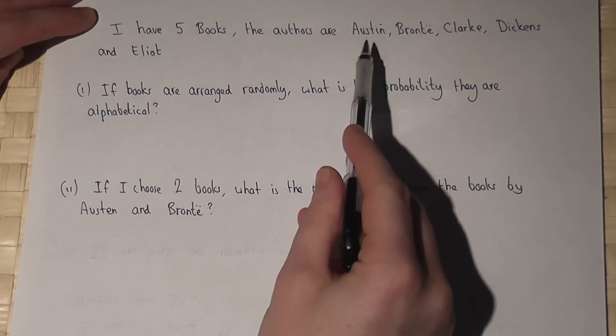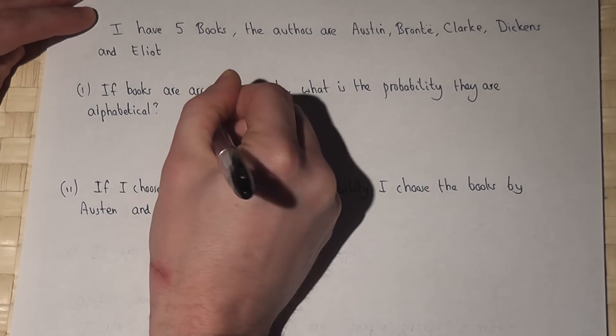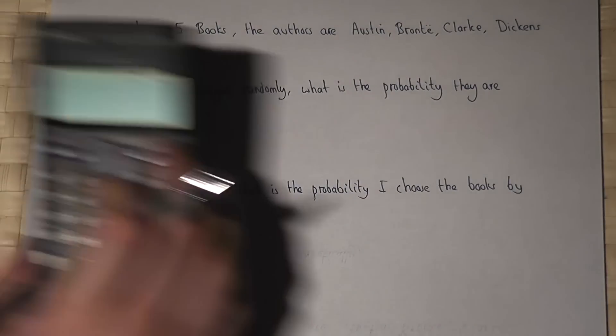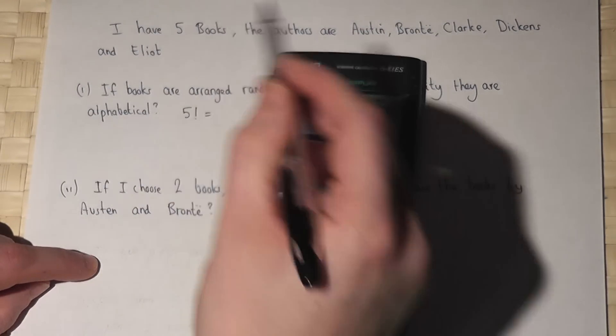To arrange five different books, there are five factorial ways of doing so. If you're unsure how to work out five factorial, it means five times four times three times two times one.